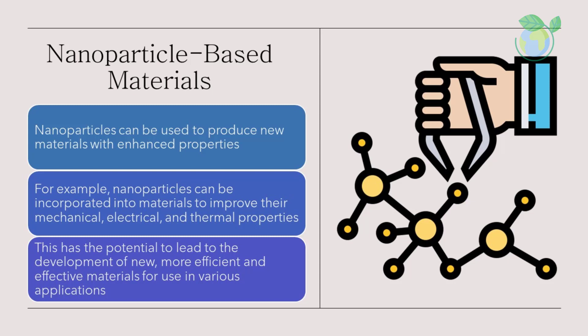Nanoparticles can be used to produce new materials with enhanced properties. For example, nanoparticles can be incorporated into materials to improve their mechanical, electrical, and thermal properties. This has the potential to lead to the development of new, more efficient and effective materials for use in various applications.